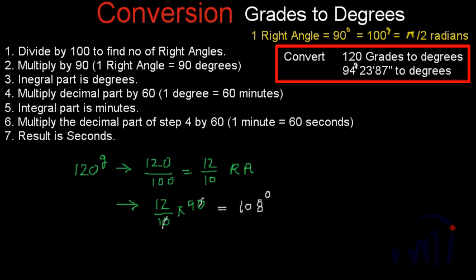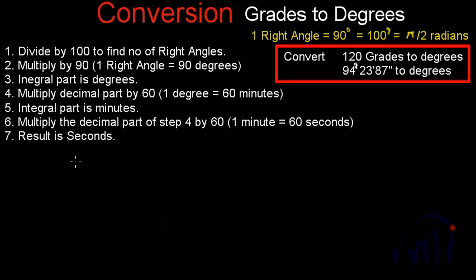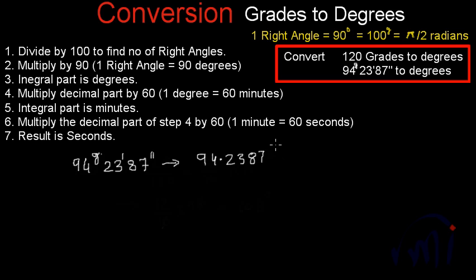Now let's go to the second problem. We have to convert 94 grades, 23 minutes and 87 seconds into degrees. This is actually equal to 94.2387 grades, because grades perfectly follow the decimal system. One grade is equal to 100 minutes and one minute is equal to 100 seconds, so this can be written as a decimal.